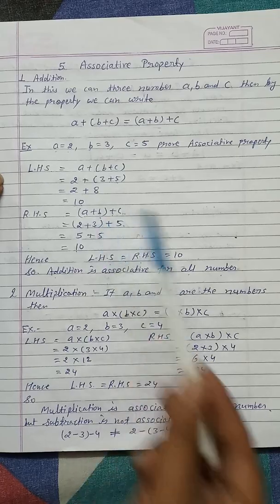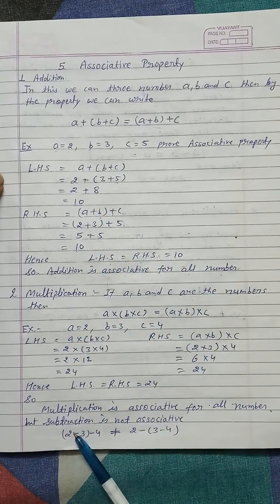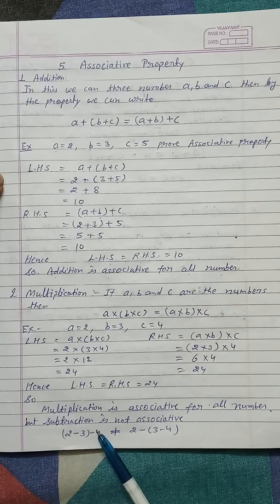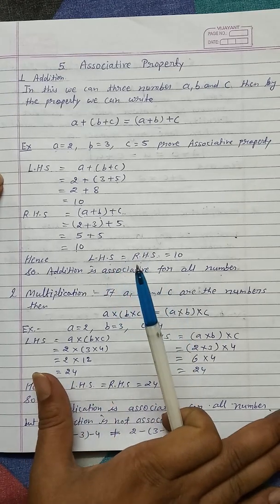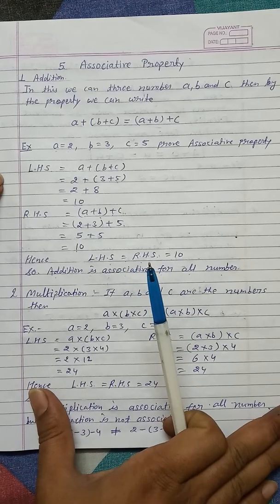So in these two properties associative properties hold and in subtraction it does not hold. So it is our fifth property, fifth point: associative property. Thank you.